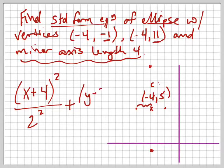y minus 5 squared, because that's the x-coordinate of the center, I'm sorry, y-coordinate of the center, all over the vertical distance right here, which is 6 squared equals 1.